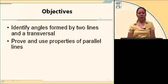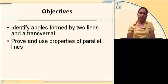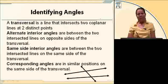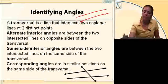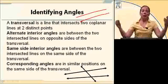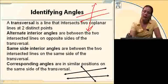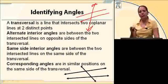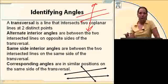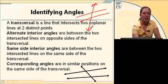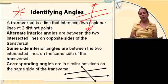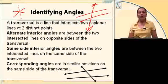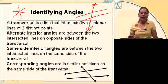The objectives for this lesson are to identify angles formed by two lines and a transversal, and to prove and use properties of parallel lines. A transversal is a line intersecting two different lines in two distinct points. The distinct point requirement means the third line cannot pass through the same point where the two original lines cross.